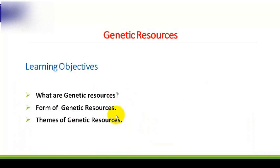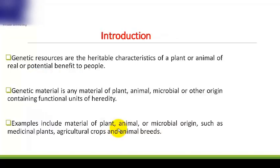This is an introductory lecture, in which we will discuss what are genetic resources, different forms of genetic resources, and different themes of genetic resources. Basically, genetic resources are genetic material of actual or potential value, or genetic material is any material of plant, animal, or other origin containing functional unit of heredity. Examples of such resources include material of plants, animal, or microbial origin, such as medicinal plants, agriculture crops, and animal breeds.